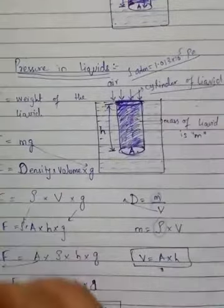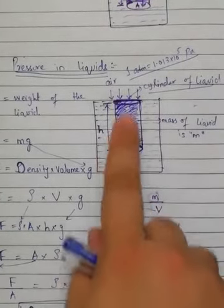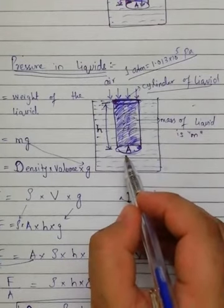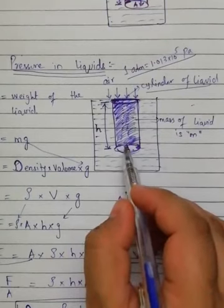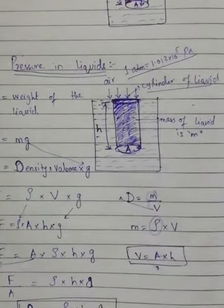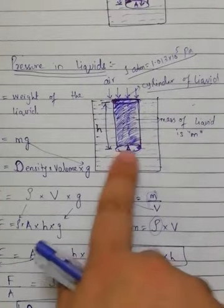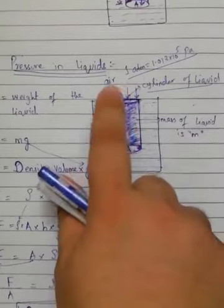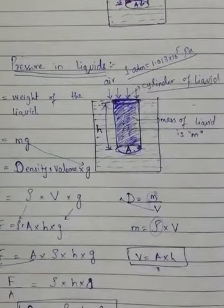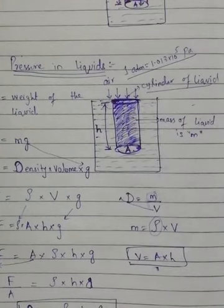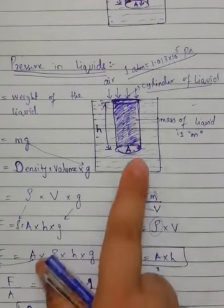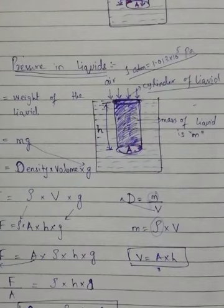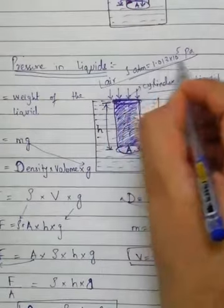If I want to find the pressure at this point, at this level due to the liquid only, I just use the formula P = ρgh. But if I want to find the total pressure exerted at this level, it will be equivalent to the pressure due to the liquid — found by this formula — plus the pressure of this air. So this formula alone does not show the total pressure applied at any point inside the liquid; it only shows the pressure due to this liquid alone. You can also say that in this formula, you neglect the atmospheric pressure.